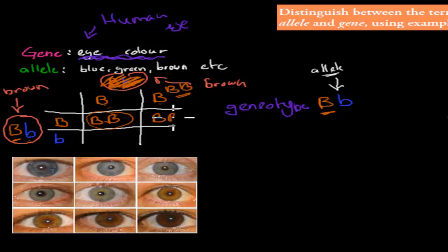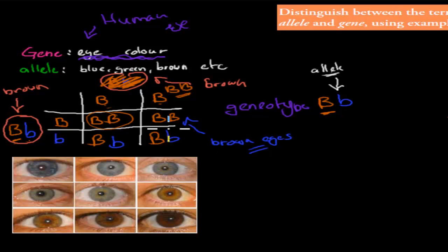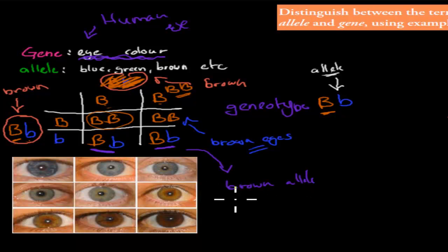That's a purebreed brown. Then you would have brown-blue and brown-blue. So the phenotypes here — in terms of looks — were all brown eyes. But there was one example where the genotype is a bit different: one has brown and brown alleles, and another has a brown and a blue allele. The blue allele is hidden so you can't see it, but it's still in the actual combination of chromosomes and genes.